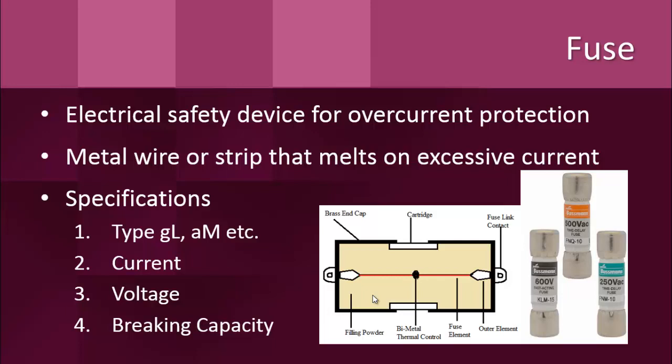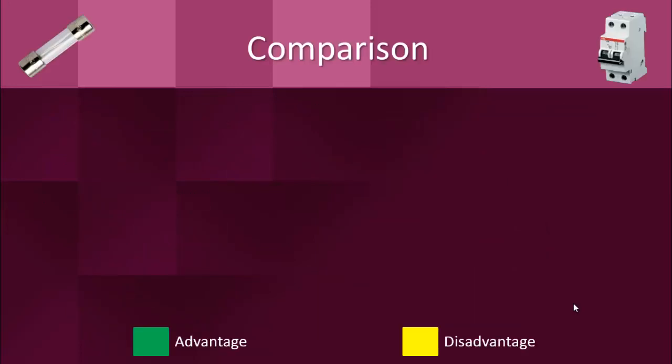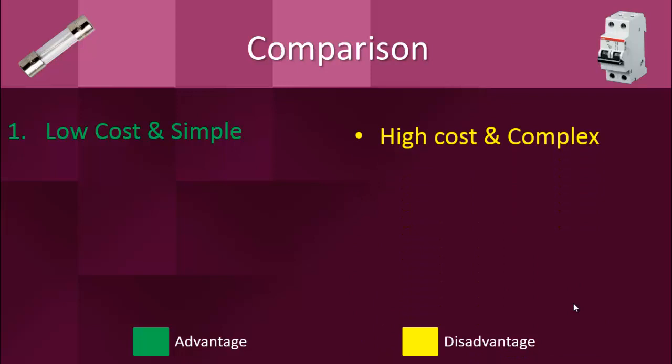Both fuses and circuit breakers help protect against short circuit and overload currents. After this introduction, it's time to see the main differences between these two devices. The fuse is on the left side and the breaker is on the right side. Green color shows advantages or merits, whereas yellow color means disadvantages or demerits. The first difference is that fuses are relatively cheap and simple in construction, whereas breakers are relatively expensive and complex due to their electromagnetic mechanism.